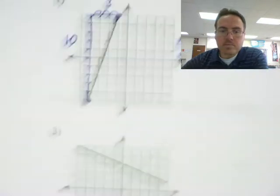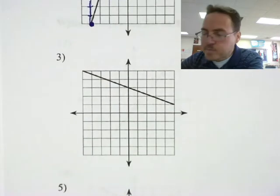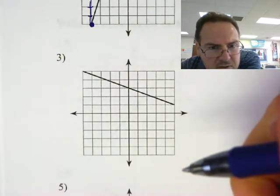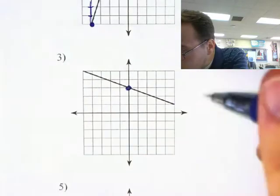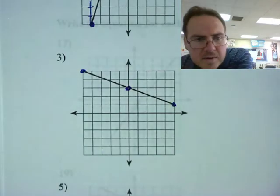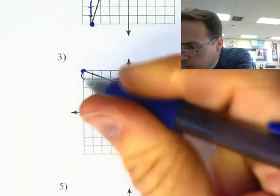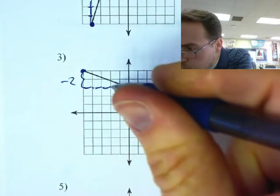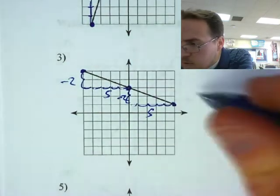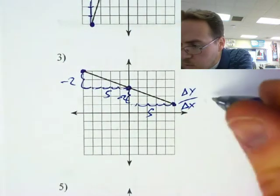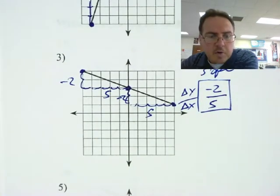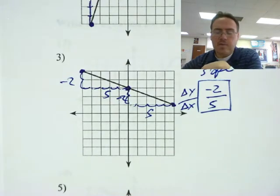Number 3. Looking super carefully at two coordinates it passes through. It looks like it crosses right at those spots. It goes down 2 and over 5. So the change in Y over the change in X — the rise over run — is down 2 and over 5. That's my slope: negative 2 fifths, because it goes down 2 and over 5 repeatedly.